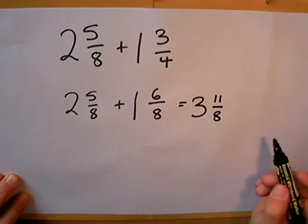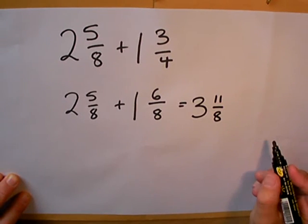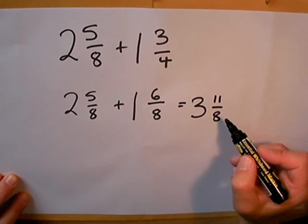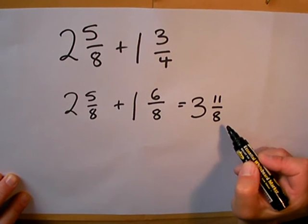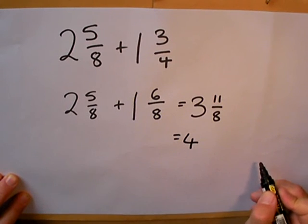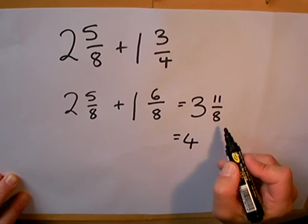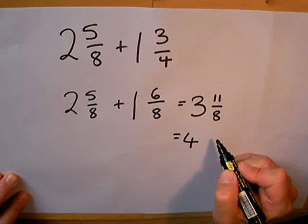I find that the second part of the mixed number, the fractional part, is a top-heavy fraction, so I know I can make an extra whole one. Remember, eight eighths makes one whole one, so I have enough to make an extra whole one. Because I use eight eighths up to make that whole one, I've only got three eighths left over.